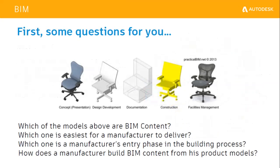Before getting into what a BIM object is, the same object — let's say a chair — will look different at each and every stage of a project, and it will carry its own information at each stage. The key is to find out which one is the BIM content, which the manufacturer can deliver, and where the manufacturing entry phase is. How does a manufacturer provide that kind of information? That's what this is about.